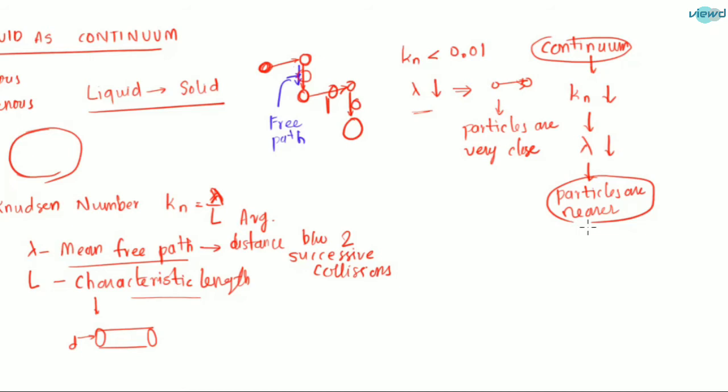Continuum means the particles are very near — we cannot distinguish the distance between the particles. So if the Knudsen number is very small, we can say it is a continuum. To summarize: if the Knudsen number is less than 0.01, then the continuum assumption is valid.